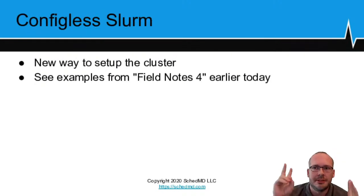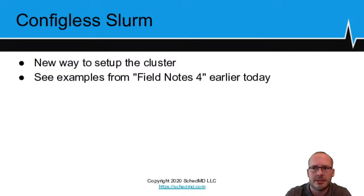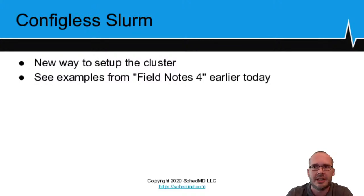We also introduced configless Slurm — it's a little bit of a misnomer. There is still a configuration file for Slurm. This just means compute nodes don't need to directly manage a local copy of this file, but can instead fetch it from the Slurm controller. You can set this up automatically with the appropriate DNS SRV records, or there's a command-line option to the slurmd process if you don't have access to modify DNS records directly. Jason Booth covered this in extensive detail in the Field Notes 4 presentation this morning.